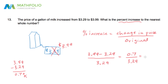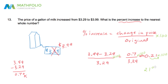This number goes on as 0.2127 and so on, so I'm rounding to approximately 0.21. We must then multiply by 100 to convert from a decimal to a percent increase. Multiplying by 100 moves the decimal point two places, giving a final answer of approximately 21% increase. That's how much the milk price went up.